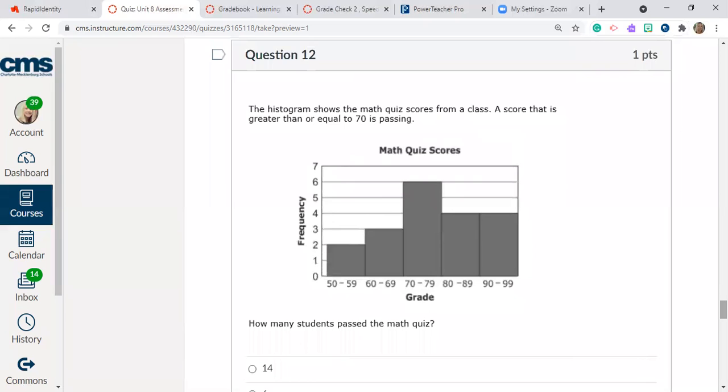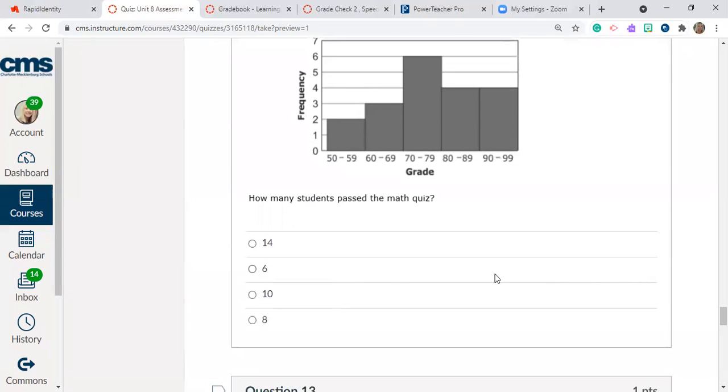Question number 12. The histogram shows the math quiz scores from a class. A score that is greater than or equal to 70 is passing. So take a look at your histogram down here. We have the grades down here. And then we have the number of students over here. So how many students passed the math quiz? 14, 6, 10, or 8.